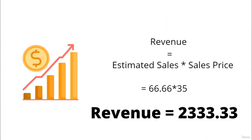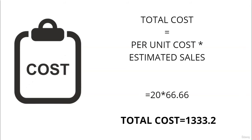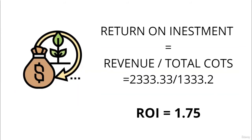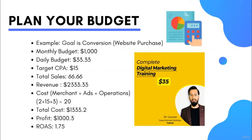The sale price is $35, and I've projected 66.66 course sales from my monthly budget. Multiplying estimated sales by price — 66.66 × $35 — gives total revenue of $2,333.33. The estimated per unit cost is $20, and expected sales count is 66.66, giving a total cost of $1,333.33. Subtracting total cost from revenue gives a total profit of $1,000.30. Dividing revenue by total cost gives a return on investment of 1.75.